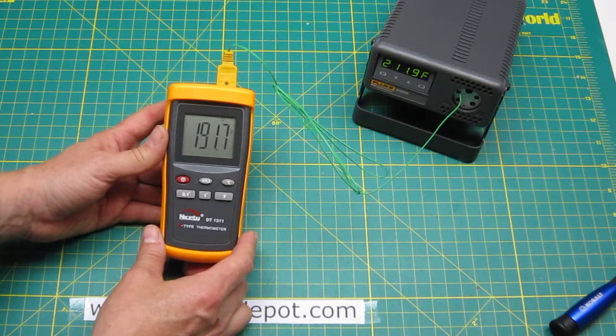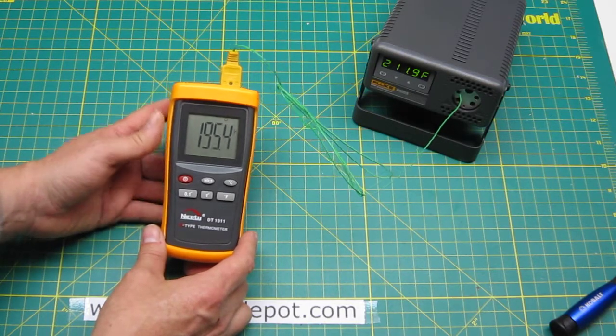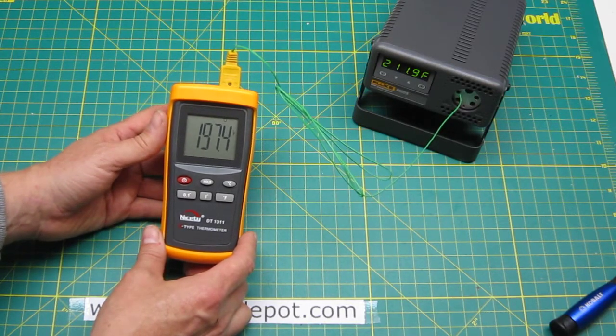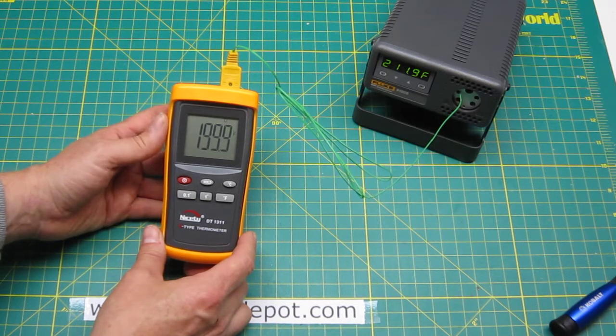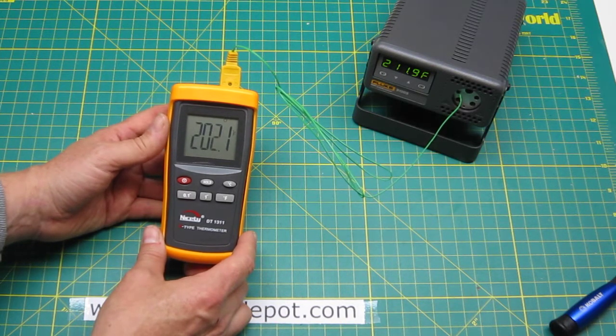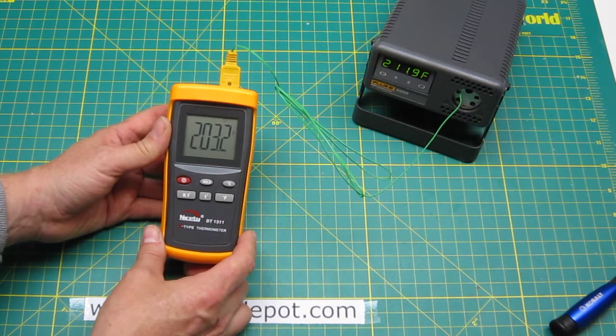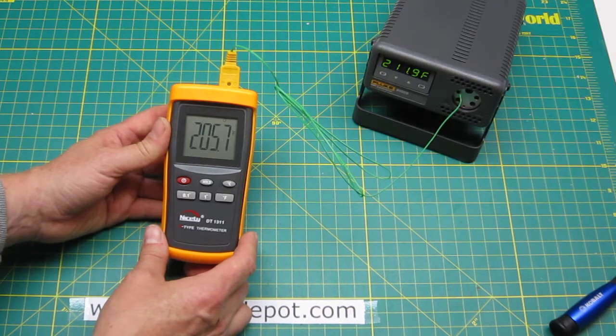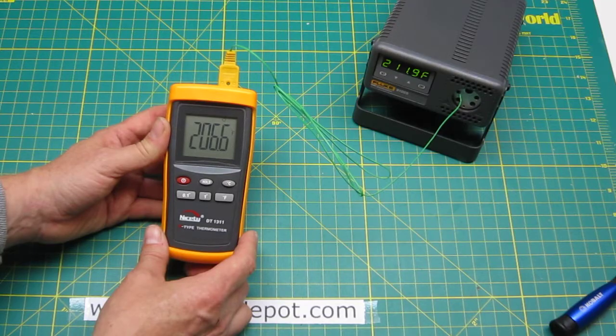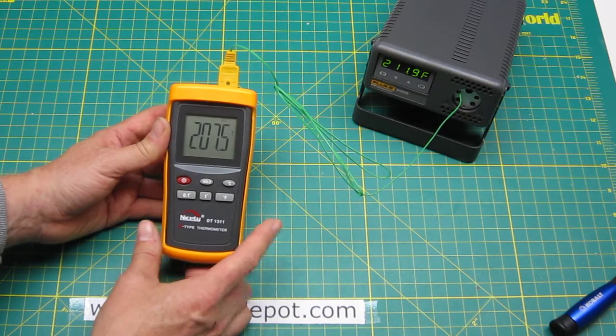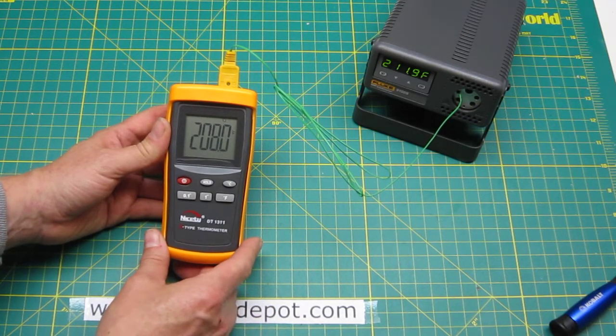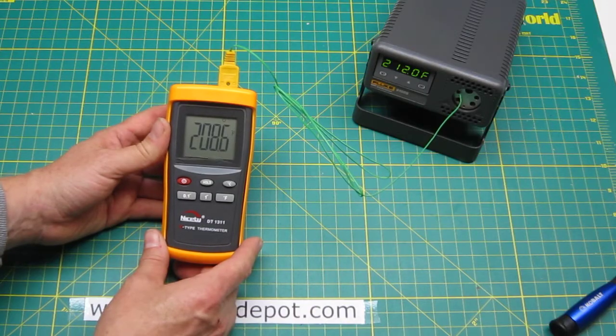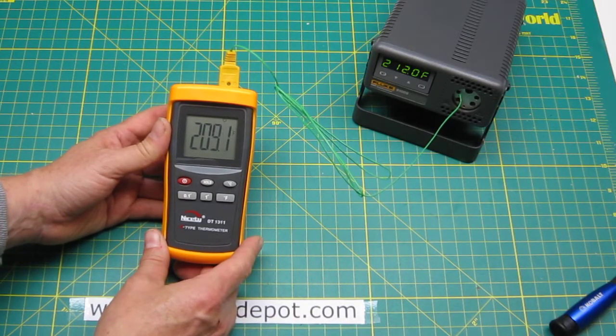One important thing to know about thermocouples is they are not high precision temperature sensors. They are only accurate to about plus and minus four degrees Fahrenheit so if you're not exactly on the value that is to be expected. But let's see how close we will get with this.